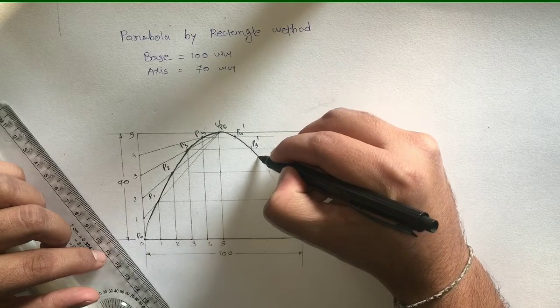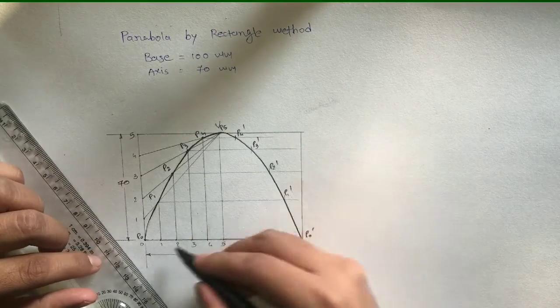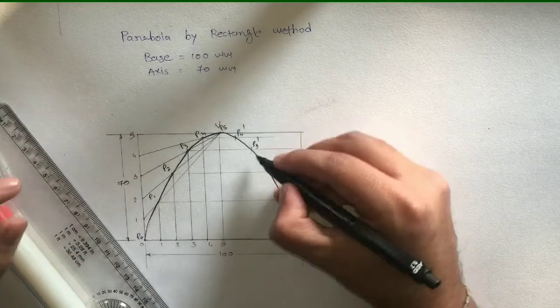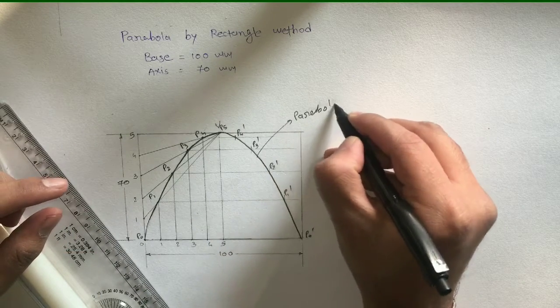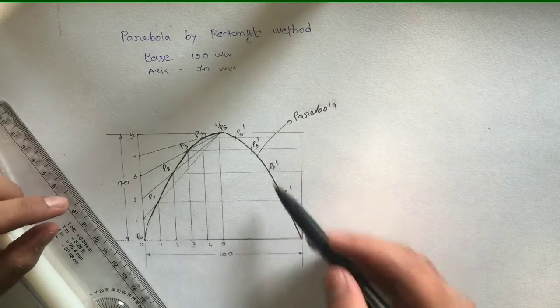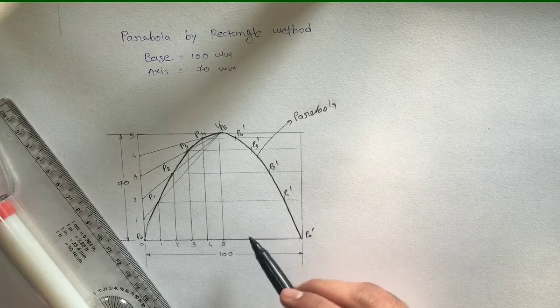Again connect all these points with the freehand sketch. So now it is the required parabola by rectangle method. I hope you got the idea and procedure of drawing the parabola by rectangle method. Thank you.